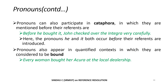Cataphora is the use of an expression or word that co-refers with a later, more specific expression in the discourse. Pronouns can participate in cataphora, in which they are mentioned before their referent. For example: 'Before he bought it, John checked over the Integra very carefully' — here 'he' and 'it' appear before 'John' and 'the Integra,' which is called cataphora. Pronouns also appear in quantified contexts in which they are considered to be bound. For example: 'Every woman bought her Acura at the local dealership' — under the relevant reading, 'her' does not refer to some specific woman in context, but instead behaves like a variable bound to the quantified expression 'every woman.'